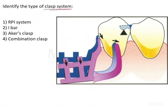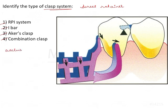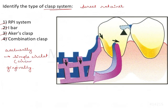We need to identify the type of clasp system, meaning we identify the direct retainer. The options are RPI system, I-bar, acres clasp, and combination clasp. Direct retainers are classified as either occlusally approaching or gingivally approaching. Occlusally approaching includes the simple circumferential clasp and its varieties. Gingivally approaching clasps are the Roach clasps — I-bar, Y-bar, T-bar — and their modifications.